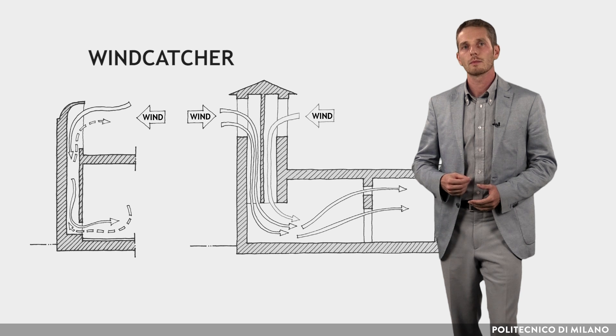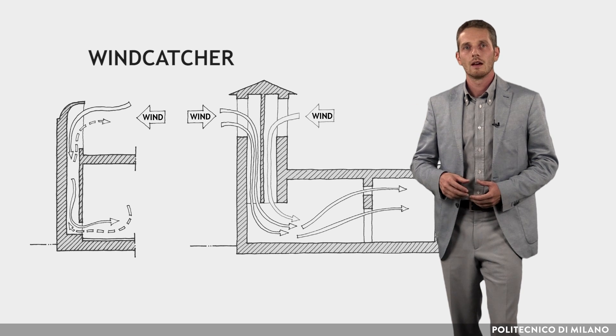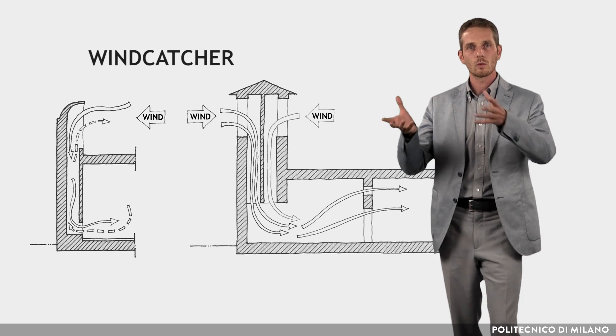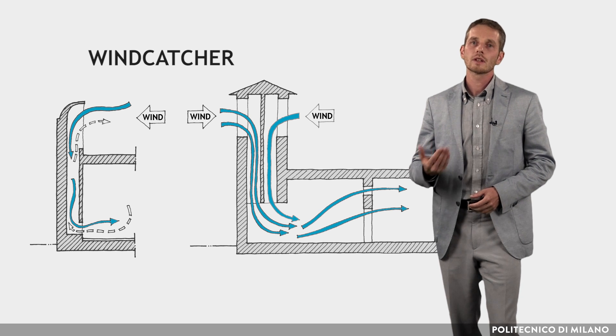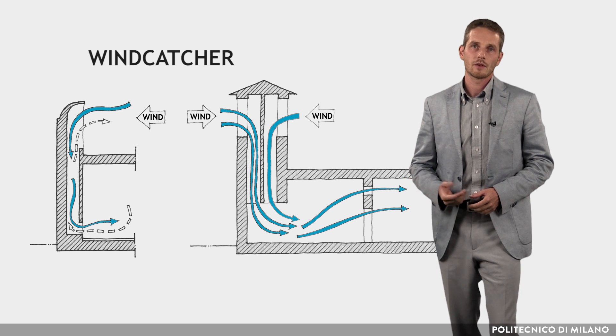Also, it may happen that the shape of the plot does not allow the building to be oriented to take advantage of the prevailing wind directions. In some countries, a traditional solution to this kind of problem is the wind catcher, a tower capable of capturing winds above the building, bringing in fresh air from outside.